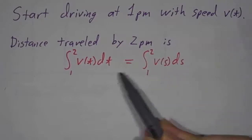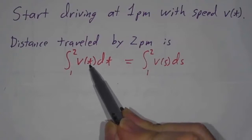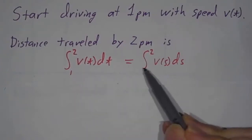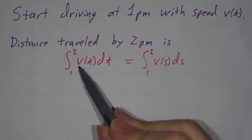It doesn't matter what the variable is called, because what you're doing is adding up the contributions of all the values of t from 1 to 2, or if you prefer all the values of s from 1 to 2. The name of the variable doesn't matter. What matters is what the function is.